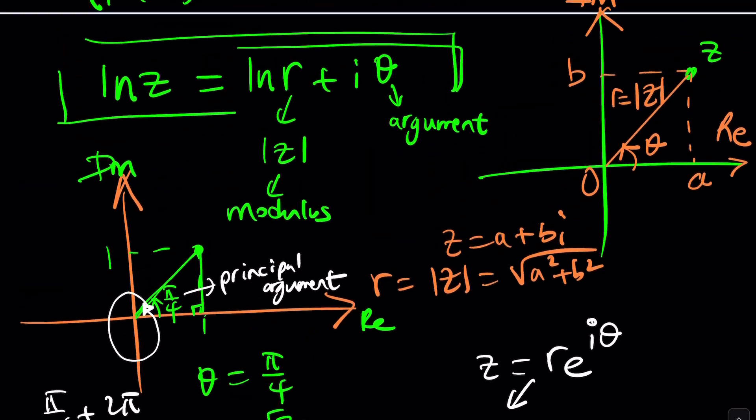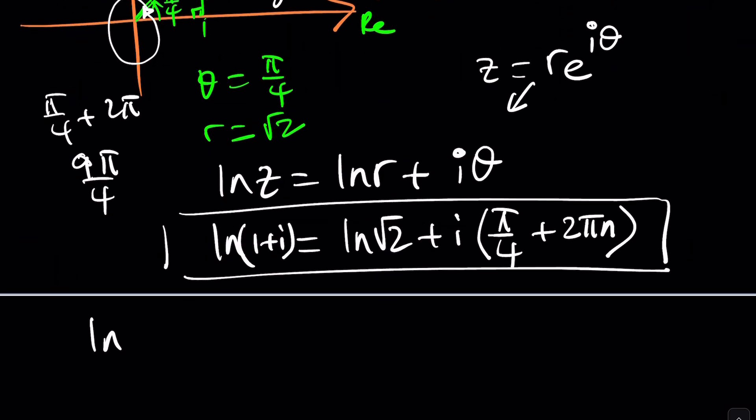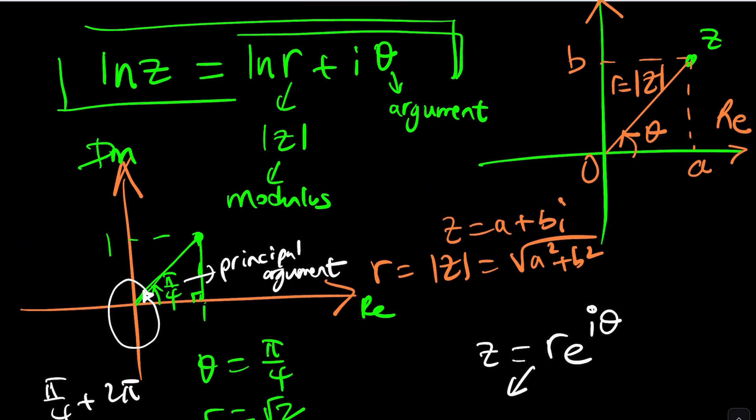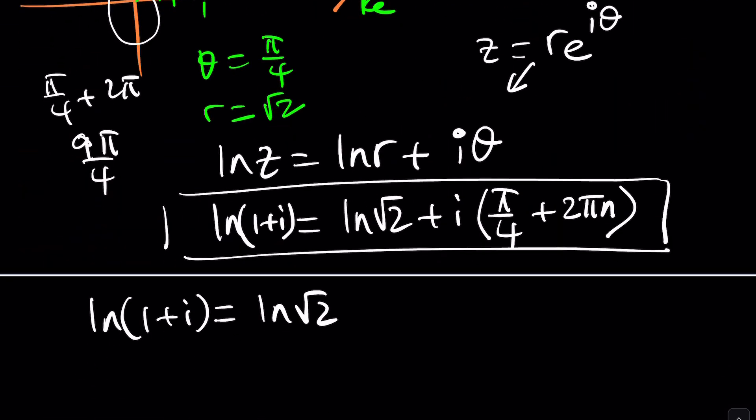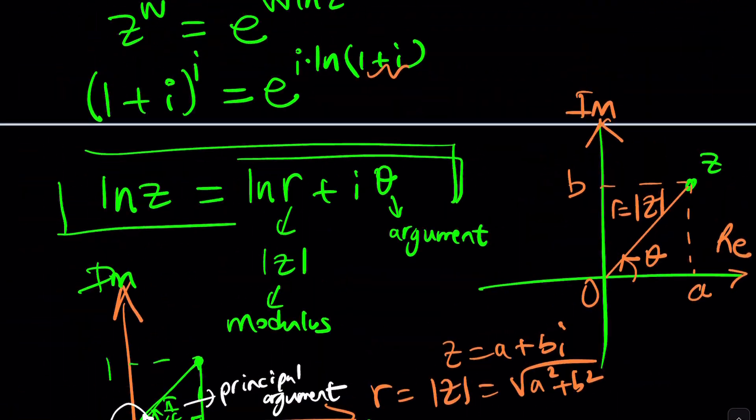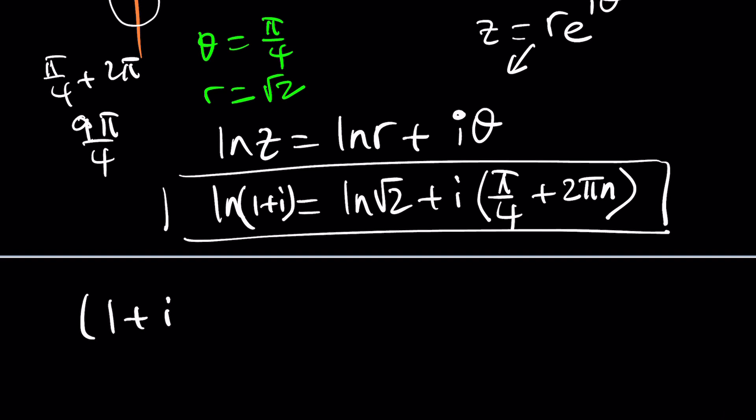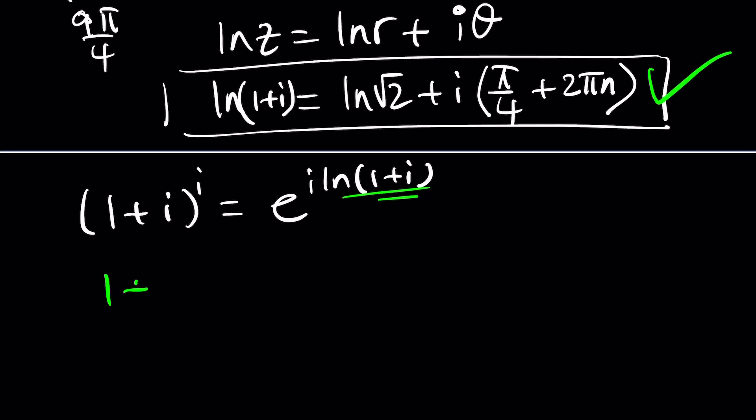Let's go back here. 1 plus i to the i. That's where I need to pick up from. This is e to the power i ln 1 plus i. So what we're going to do next is substitute this whole thing here. So now 1 plus i to the i is going to be e to the power i times ln 1 plus i, which can be written as ln root 2 plus i times pi over 4 plus 2 pi n. That's kind of gigantic. But let's go ahead and simplify this a little bit more because this is going to be interesting.